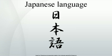Late Middle Japanese has the first loanwords from European languages. Common words borrowed into Japanese in this period include pan (bread) and tabaco (tobacco, now cigarette), both from Portuguese.